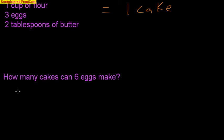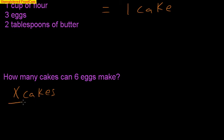I'm going to solve this using a proportion first. So in using a proportion, I read the question: how many cakes can six eggs make? 'How many' indicates that we don't know the answer, so we are going to use a variable to hold the place for the number we're looking for. I'm going to say x cakes over six eggs. The left-hand side of the proportion comes from the problem.